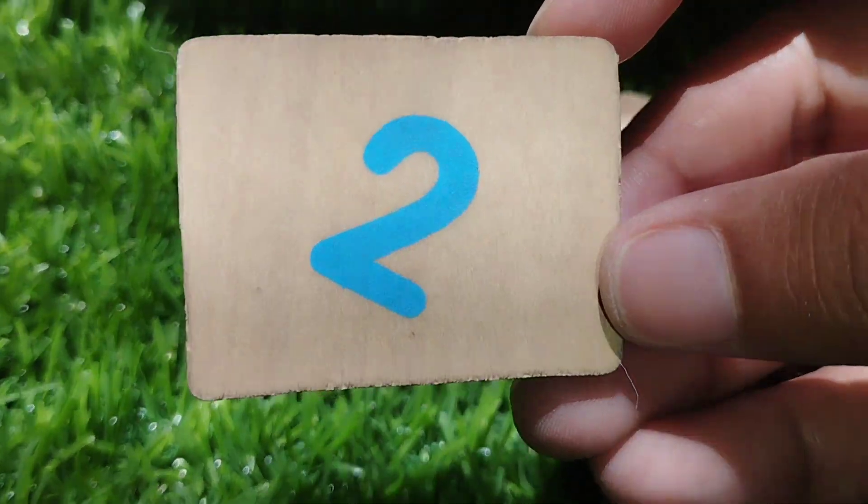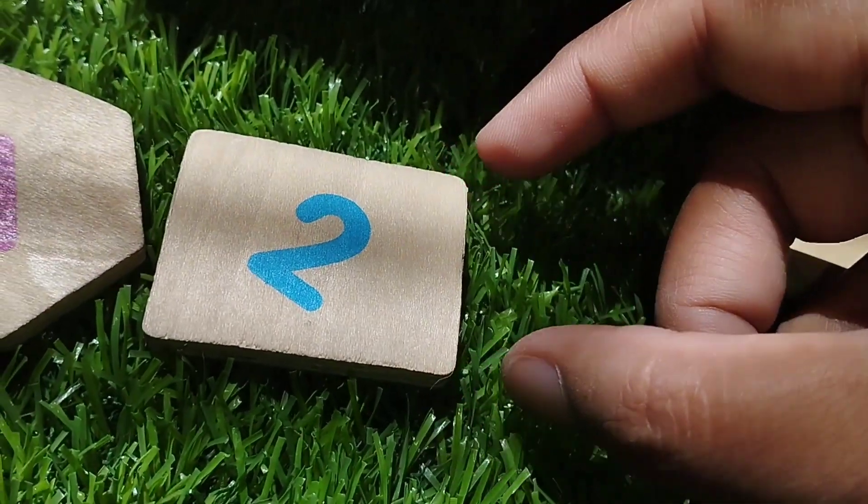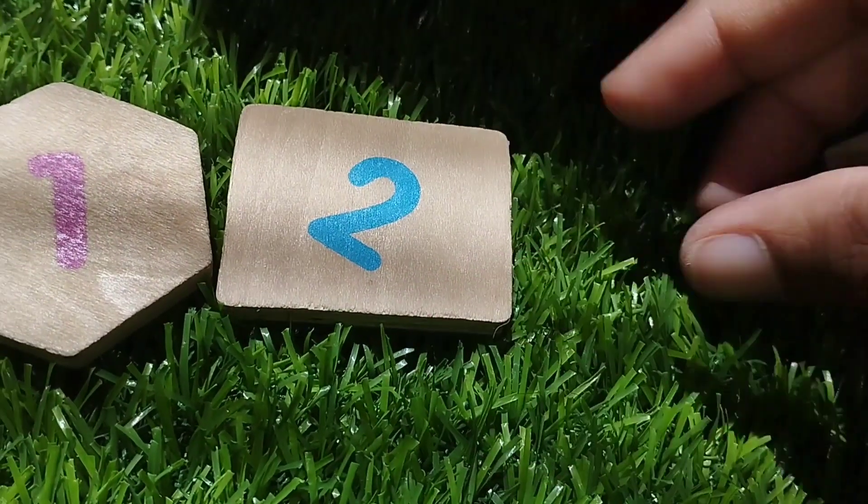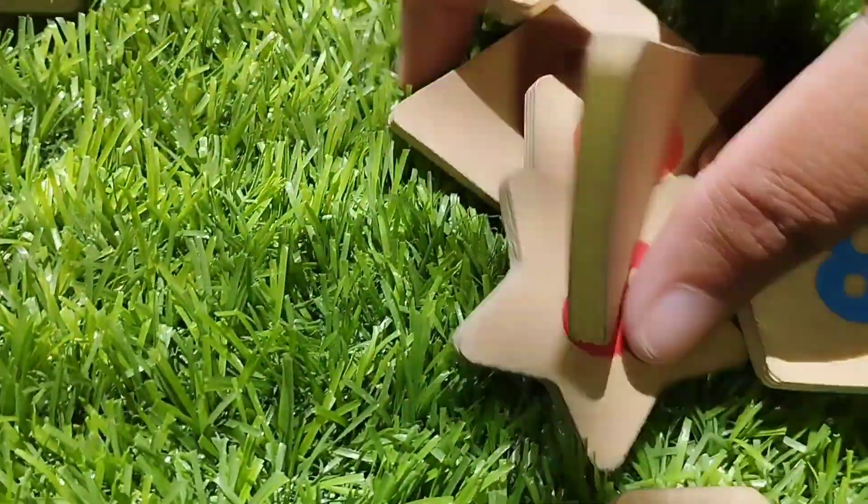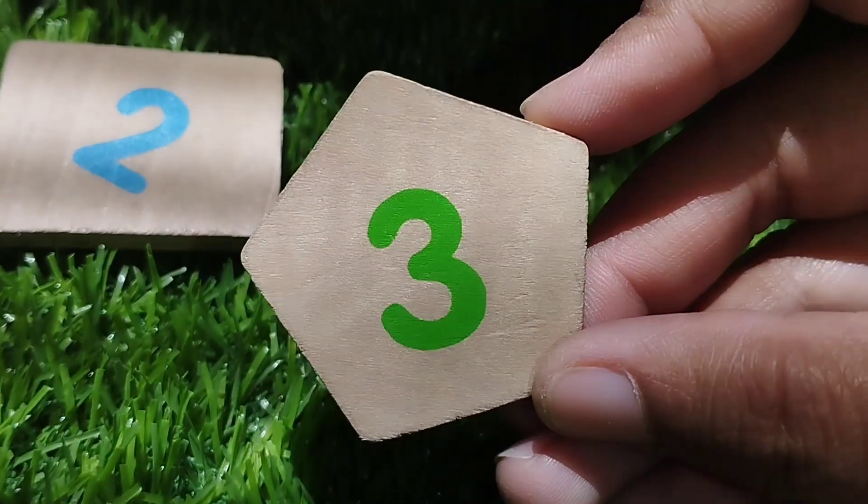The next one is rectangle shape. The number is two. Rectangle has four corners. The next shape is pentagon.